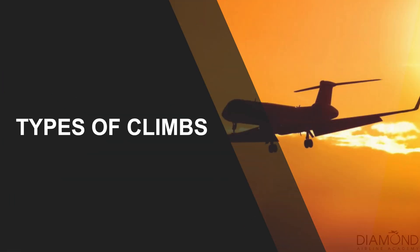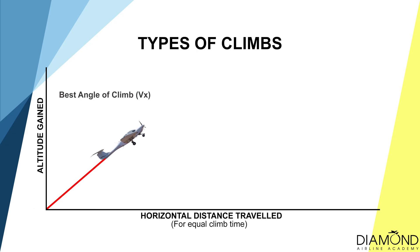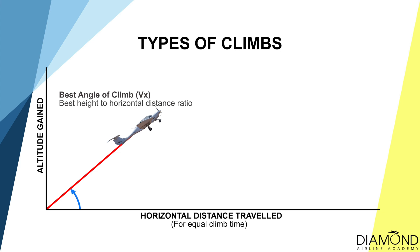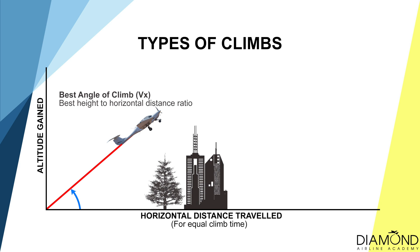Before we talk about how to actually do a climb, we'll start by talking about the different types of climb. The first one to cover is VX, best angle of climb. This climb allows the aircraft to climb at the maximum angle relative to the ground. If there are tall obstacles at the end of the runway, like tall buildings or tall trees, we have to adopt a climb which allows us to gain the most height in the shortest ground distance, which is the best angle of climb VX.